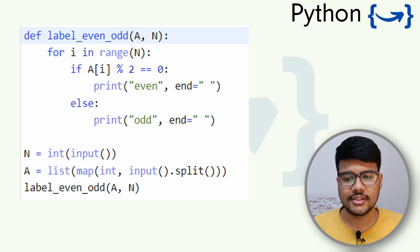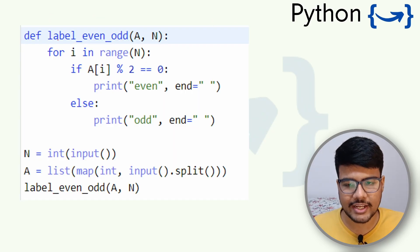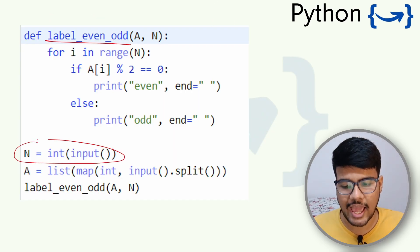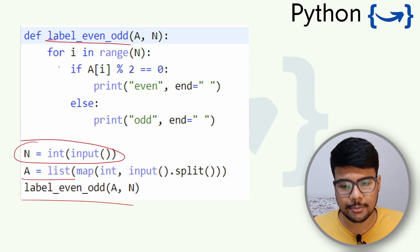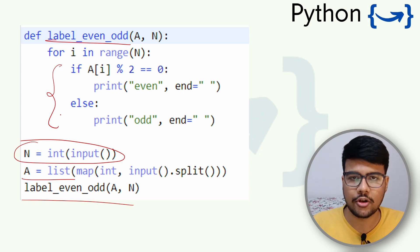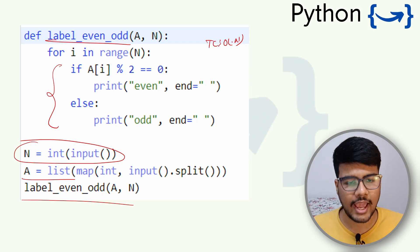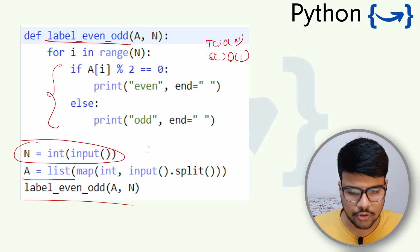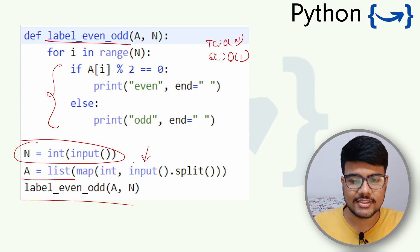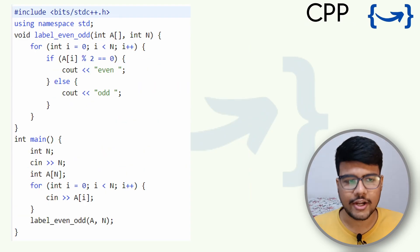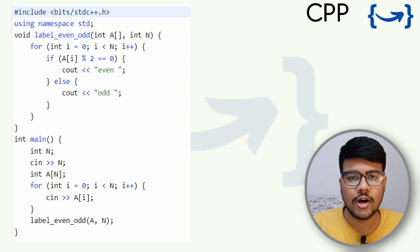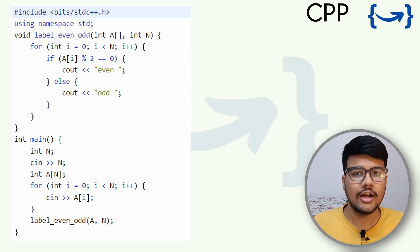Most people can solve this right away. In Python, we create a 'label_even' function, take the array size and array as user input, call the function, and print whether each number is even or odd. Time complexity is O(n) because we traverse the entire array, and space complexity is O(1) if we ignore the given input.